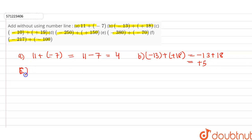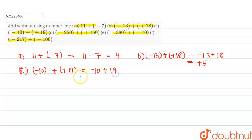Part C is –10 + (+19). Plus plus is plus, so –10 + 19. Minus plus means minus and the sign will be of the greater one, so the answer is +9.